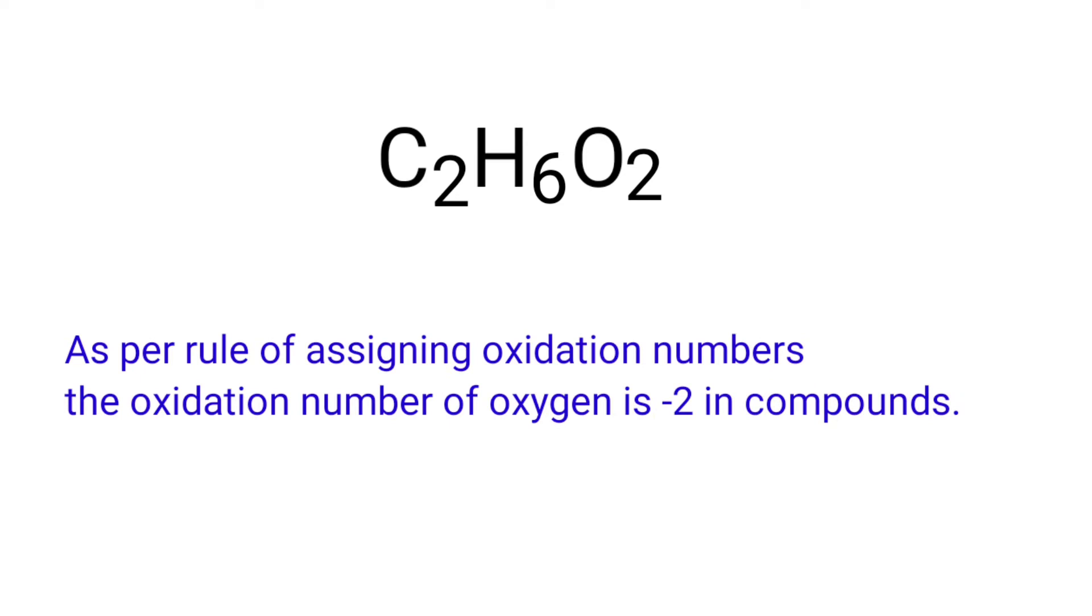As per rule of assigning oxidation numbers, the oxidation number of oxygen is -2 in compounds. We can write the oxidation number of the element above its symbol and the total number of the oxidation numbers of the atoms below its symbol.